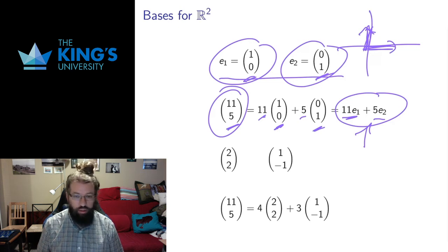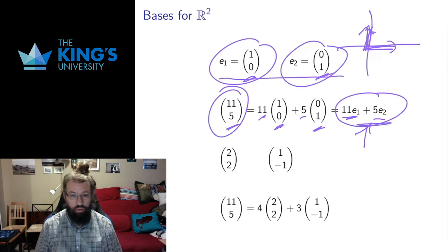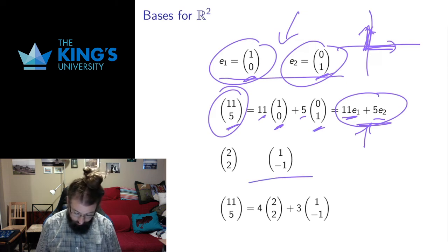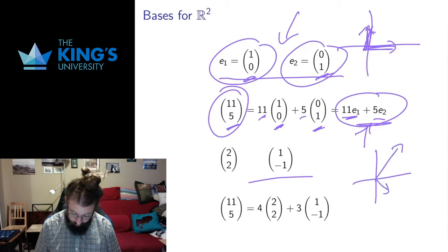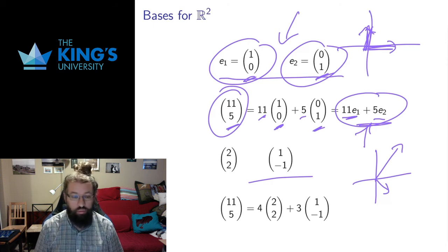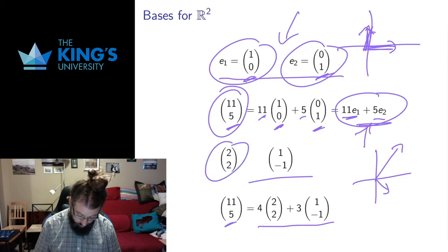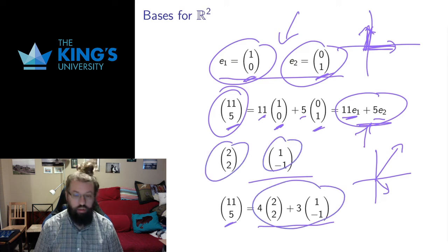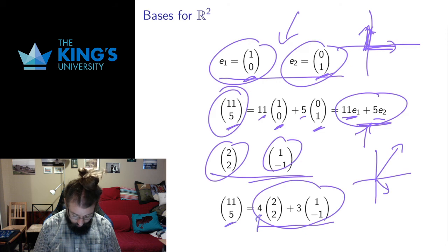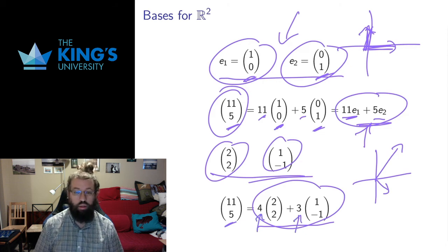A set is a basis if it's linearly independent and any other vector can be written as a linear combination of it. This basis for R2 is not unique — there are infinitely many bases. For example, the vectors (2, 2) and (1, -1) form another basis: they point in fundamentally different directions and are linearly independent. The vector (11, 5) can be written as 4 times (2, 2) plus 3 times (1, -1) as a linear combination of this basis. You can take any vector in the plane and write it as a linear combination of these two vectors, once you determine the appropriate coefficients.